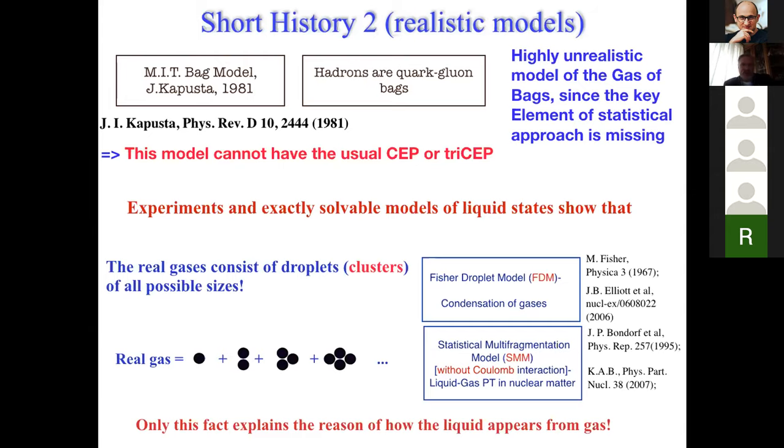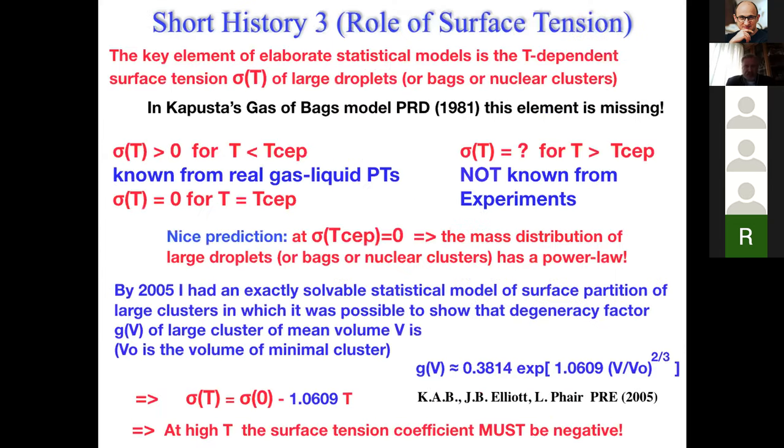But unfortunately experimentally the Hagedorn spectrum is not observed. The reasonable explanation is that hadronic resonances or bags of mass M have large widths which are proportional to square root of their mass, so they cannot be observed experimentally. The next outstanding model was Kapusta's gas of bags, suggested in 1981, based on the MIT bag model. However, it has a pathological defect, and due to it, it cannot have the usual critical endpoint. And I will discuss it in a minute. But experiments and exactly solvable models of liquid states show that real gases do not consist just of molecules. They consist of droplets of molecules of all possible sizes, so they have besides molecules also dimers, trimers, tetramers, and so on. And actually only this fact explains the reason of how and why the liquid appears from gas.